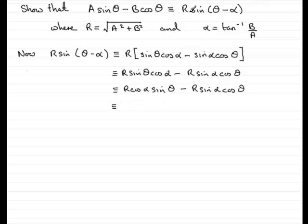Now, I said to you that R was a constant and alpha was a constant. So, if R and alpha are constants, then R cos alpha must be a constant, and the same with R sine alpha. That must be a constant.